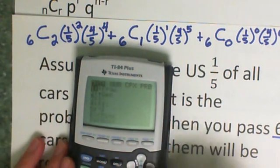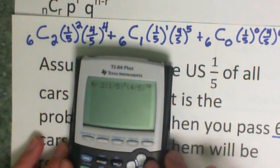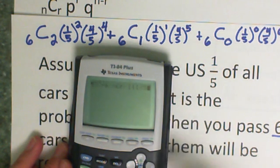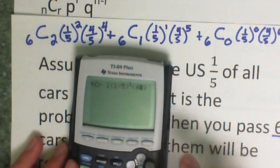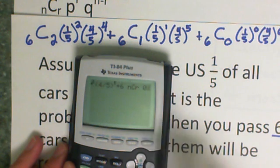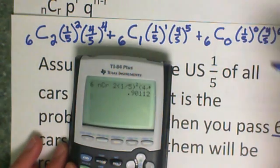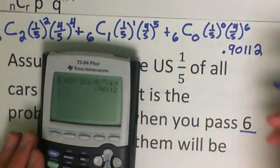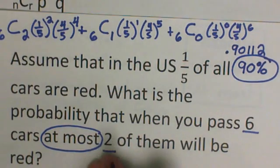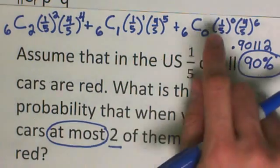We're going to type that in, six math probability, down to NCR, the two, one divided by five raised to the second, four divided by five raised to the fourth, plus six. Remember you always got to type that number in first. NCR to the one, parenthesis, one-fifth raised to the first, and four-fifths raised to the fifth, plus six, math over probability, NCR, zero, one-fifth raised to the zero, and four-fifths raised to the sixth, plus enter. That has a 0.90112 chance. If I move that two places, that is a 90% chance. So that is extremely likely that when you pass six cars, at most, or the maximum, is that two of them will be red. So this was a probability that two of them, one of them, or zero of them would be red. And on this case, with the at most, we always stop when we get to the zero.